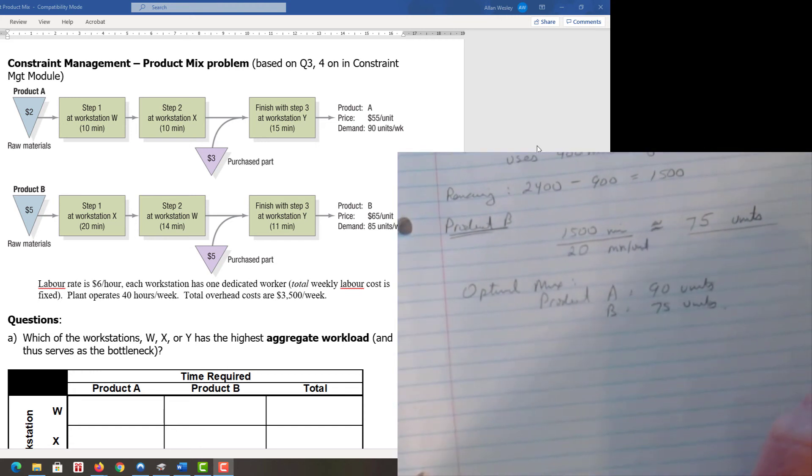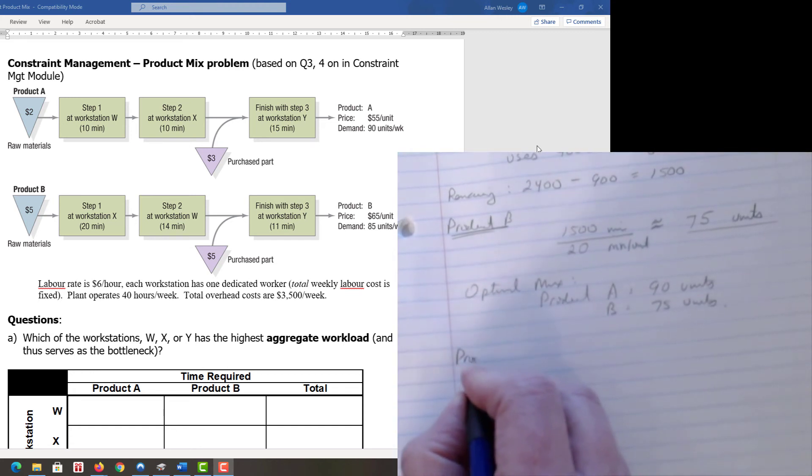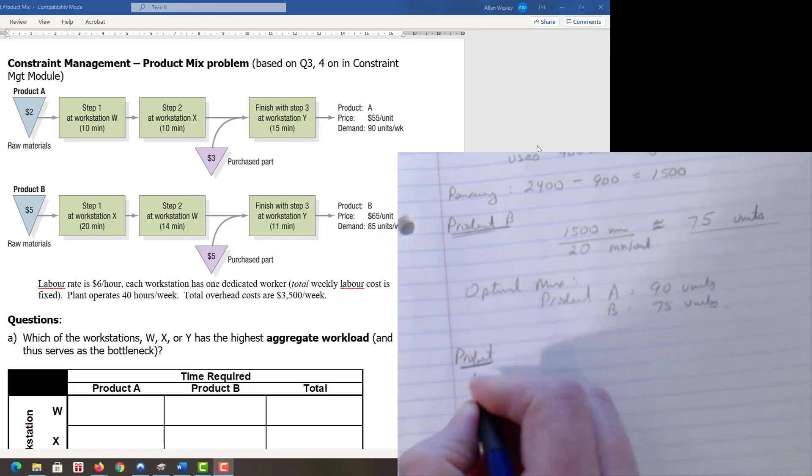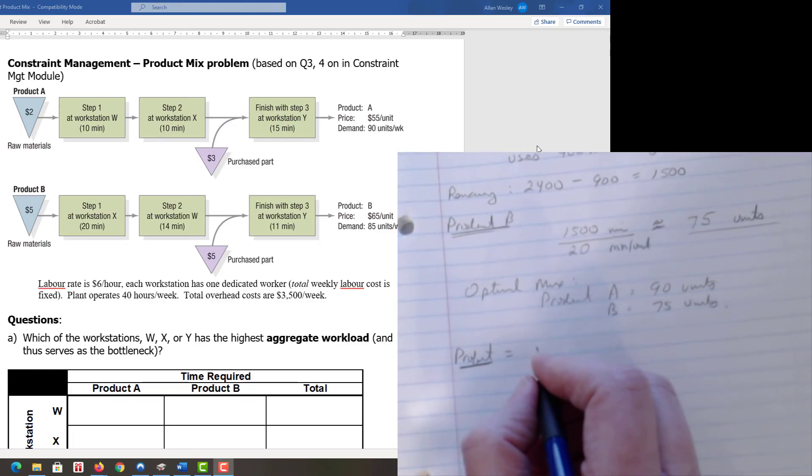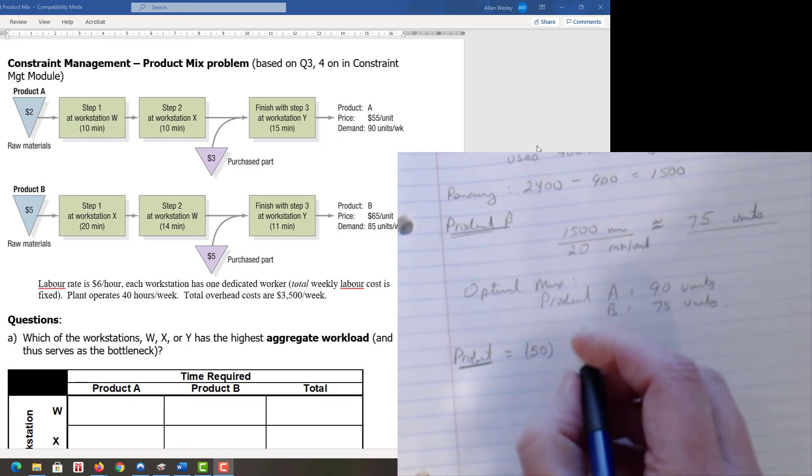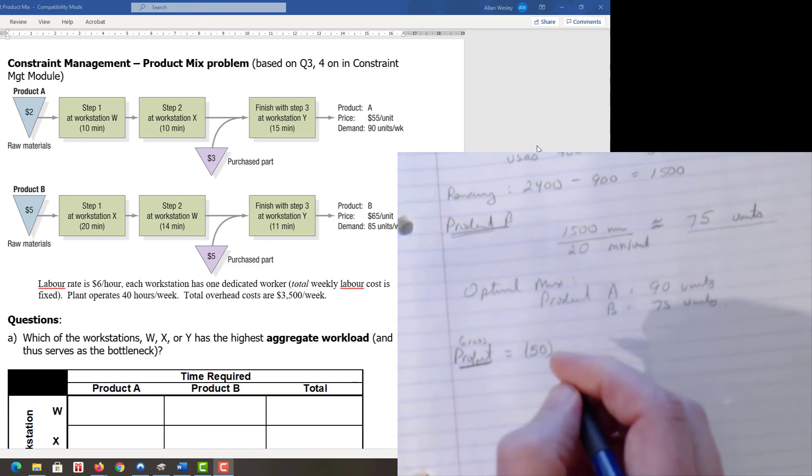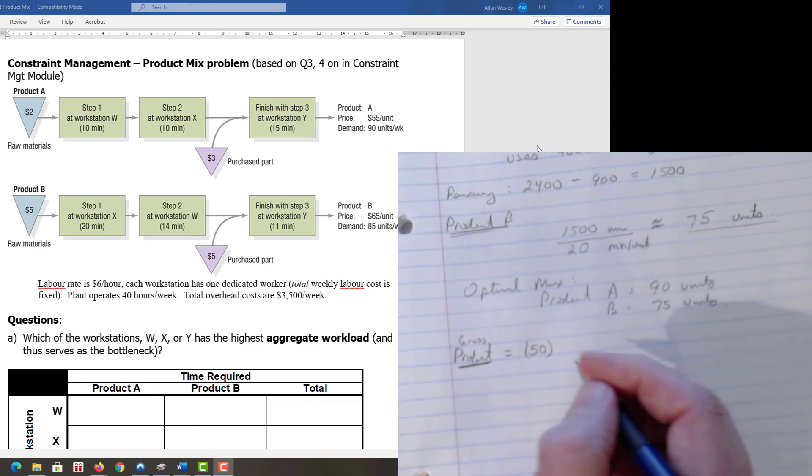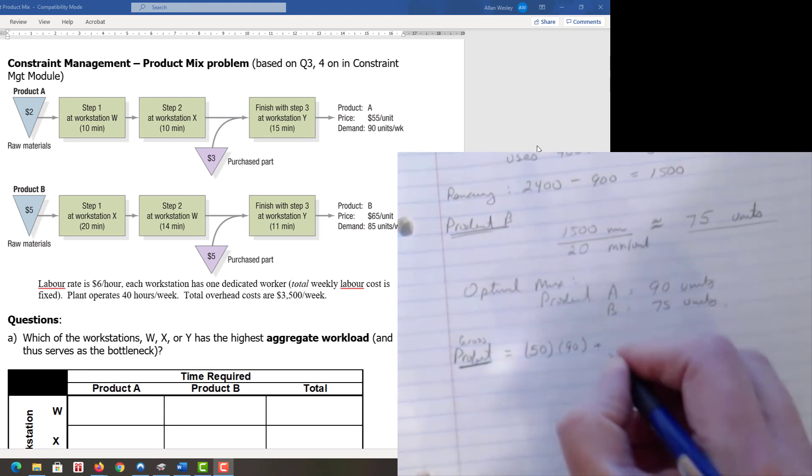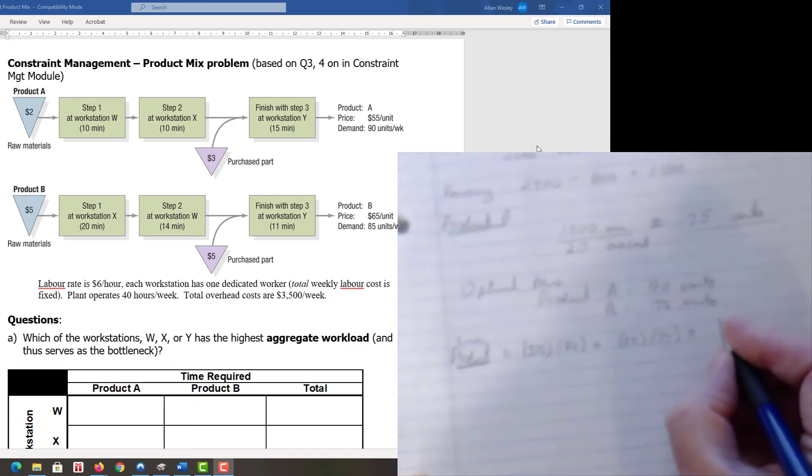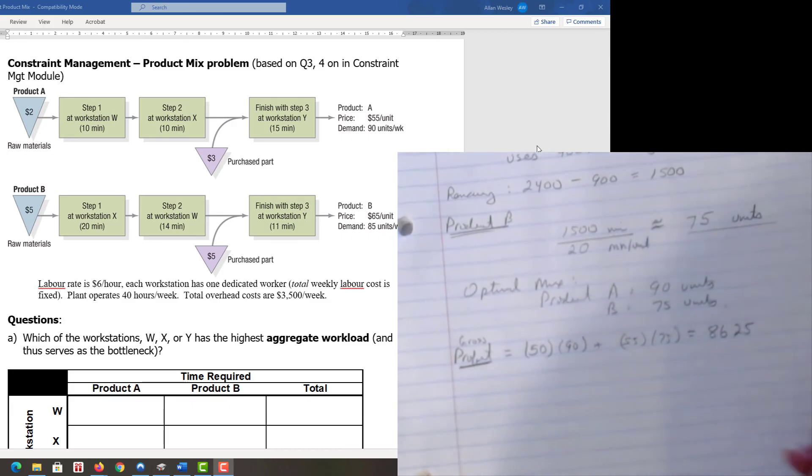What's our profit at that point? This is gross profit, by the way. We have 50 dollars times the 90 units plus 55 times the 75 units, giving us a gross profit of 8,625 dollars.